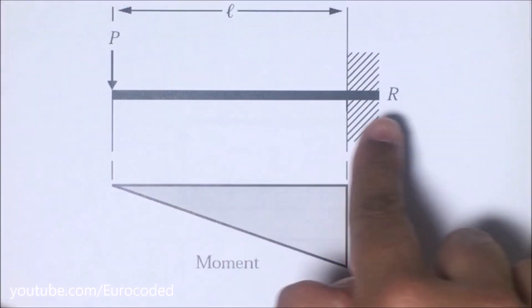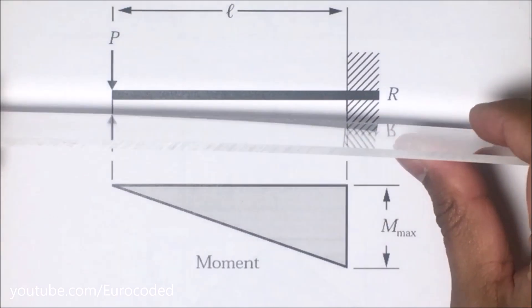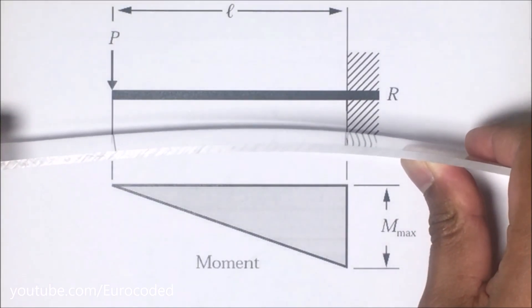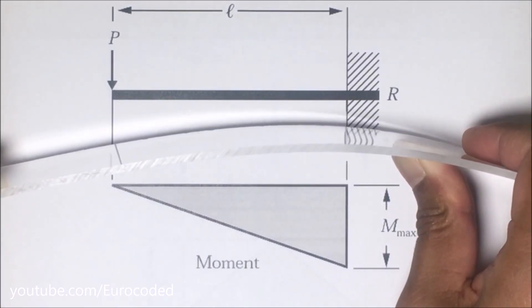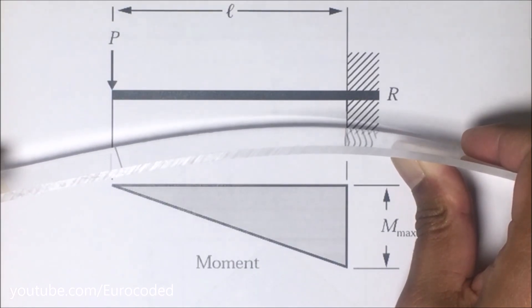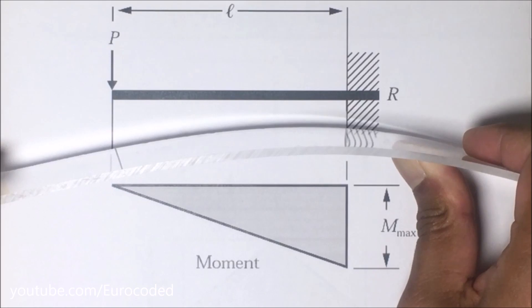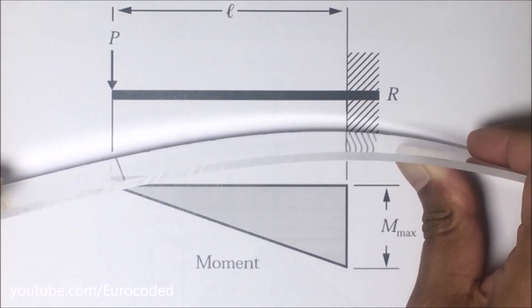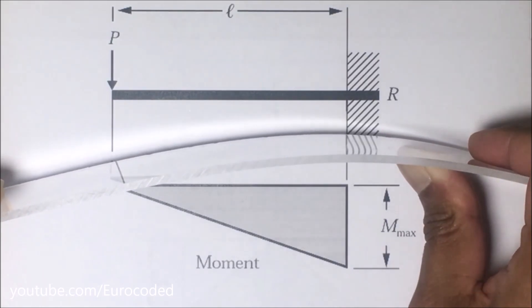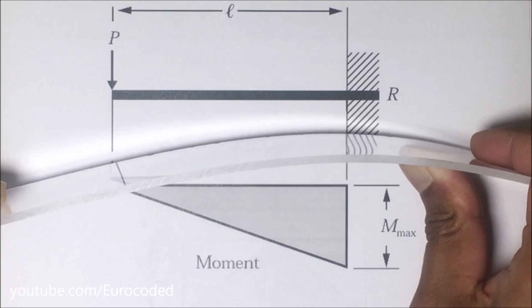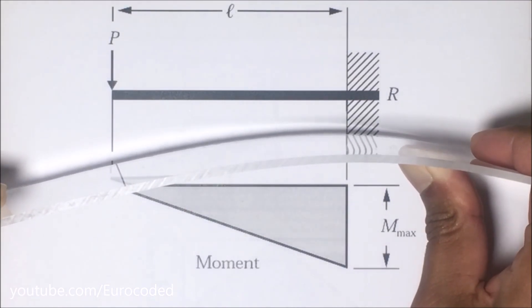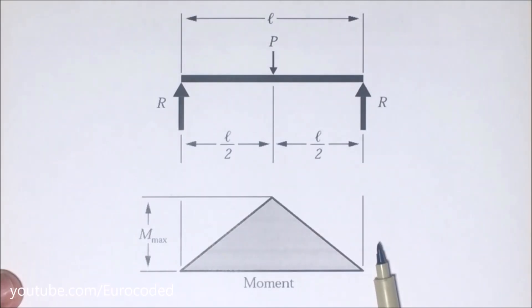If I represent this cantilevering section with a point load at the end with this piece of plastic, then we can look at the hogging bending moment. You can see that my right hand is representing the fixed support, and at that point onwards we have an upward curve in the deflected beam. Therefore, the top section of the beam is stretched, causing tensile stresses, and the bottom section is shortened, causing compressive stresses. The typical sign convention is to consider sagging bending moments as positive and hogging bending moments as negative.